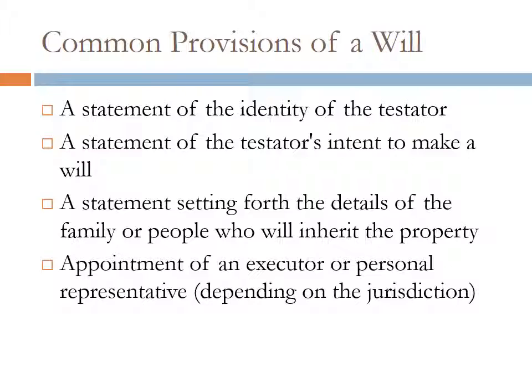Next in line is the appointment of an executor or personal representative. The wording depends on the jurisdiction. If a person has a will, the person administering it is called an executor. If there is no will — in an intestate rather than a testate action — then the person is called an administrator. In some jurisdictions in the United States, both are referred to by the term personal representative.